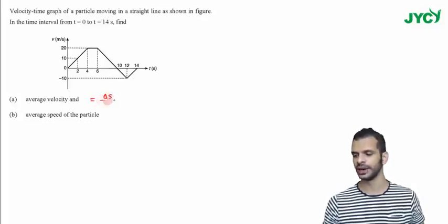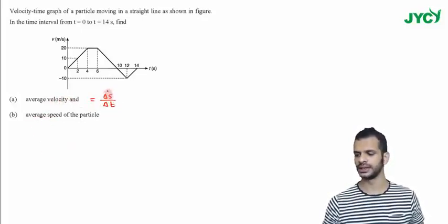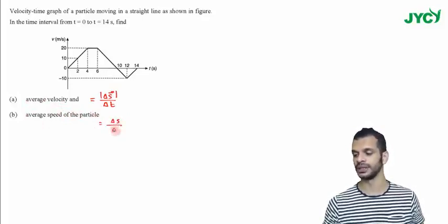What do I have to do with total displacement? So delta S by total time delta T will give me my average velocity. Similarly for average speed it is total distance. So I will write delta S bar, and here average speed is equal to delta S, distance covered by time delta T.